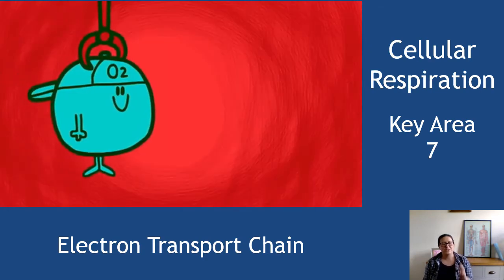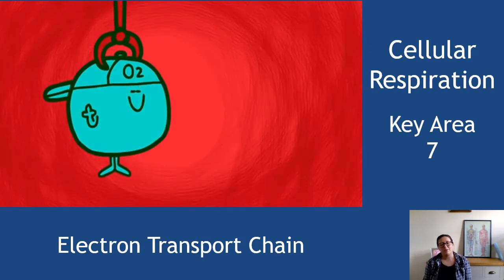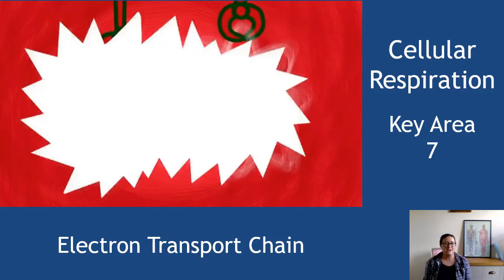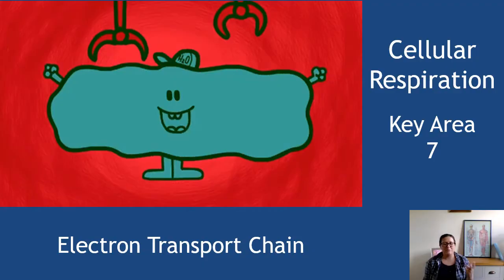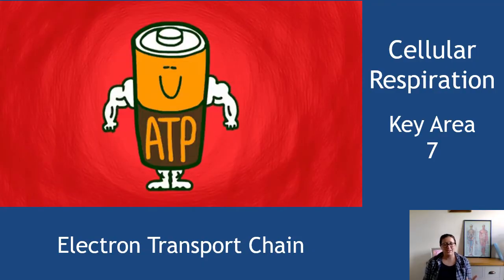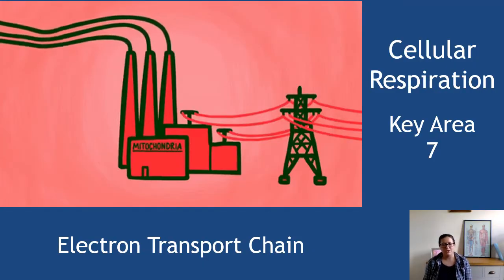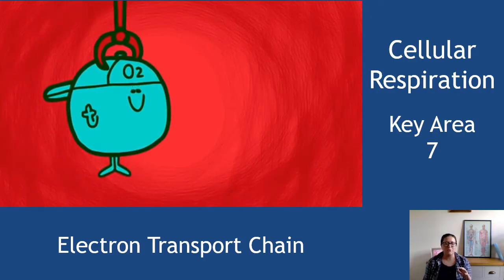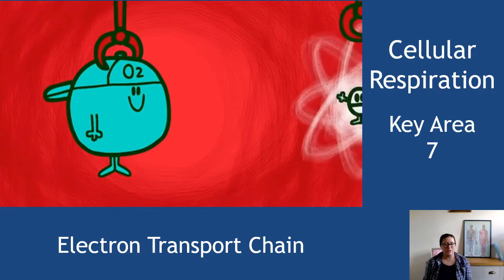Hi there, okay so this is section three of cellular respiration and we're going to be looking at stage three of aerobic respiration which is the electron transport chain. Now people really struggle with this particular stage of respiration. I personally feel like the citric acid cycle is the most evil stage, but people do struggle with this particular one.